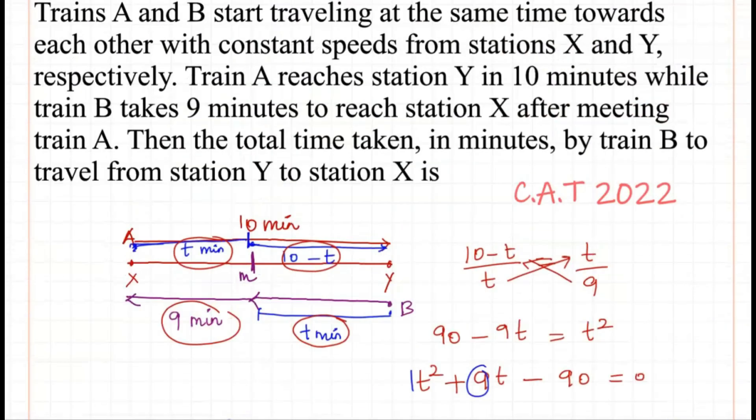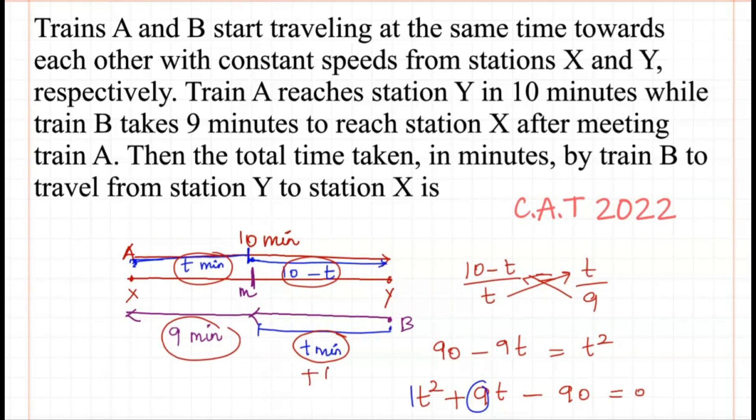Therefore, 9 + 6 = 15 minutes. So the time taken by train B from station Y to station X is 15 minutes. Thanks for watching. If you have any doubts, please let me know in the comments.